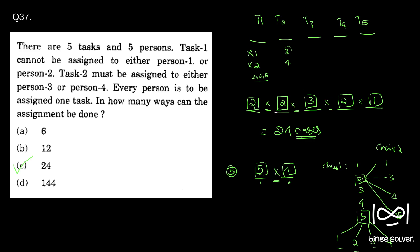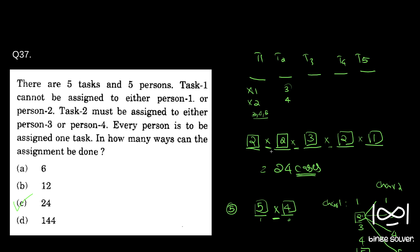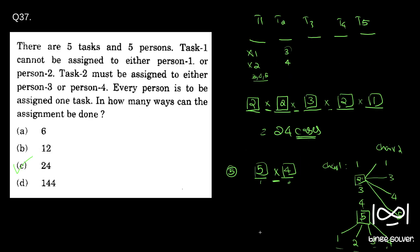For those not familiar with permutation, finding total possibilities and multiplying can feel intimidating — don't worry, it's a simple concept. Just read about permutation and combination and how the formulas are derived. If you still have doubts, comment under this video and I'll try to address them. The solution to question 37 is C — 24.